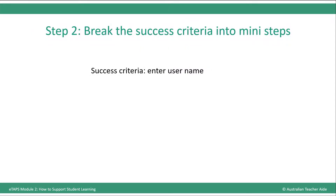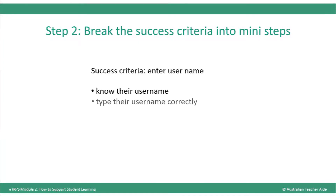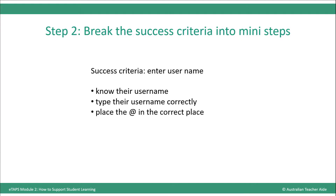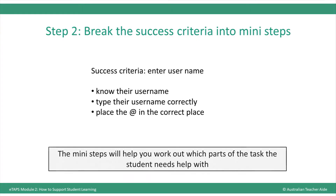Step 2 is to break the success criteria into mini steps. If a student is having difficulty logging in, you may need to break the task down further. For example, if the student can't enter their username, you could break that criteria into three mini steps: Do they know their username? Can they type their username correctly? Can they place the @ in the correct place if the username is their email address? The mini steps will help you work out which parts of the task the student needs help with.